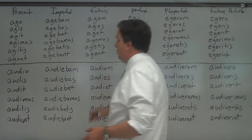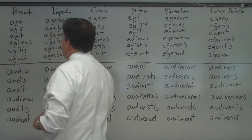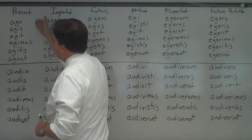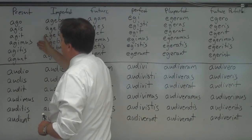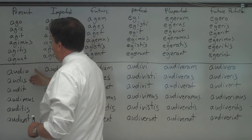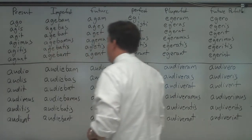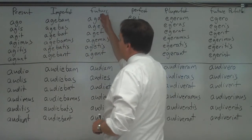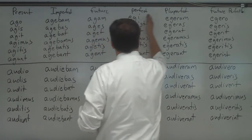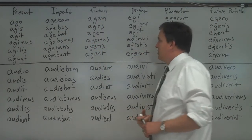We have the six tenses like normal, active and passive. The endings are the same as always: o, s, t, mus, tis, nt — and o, es, and so forth. So it's exactly the same for present, imperfect, and future. The perfect system, of course, is formed the same way.